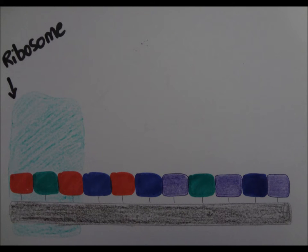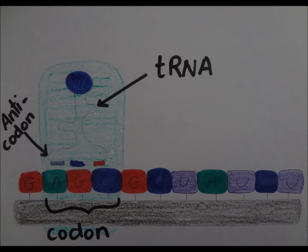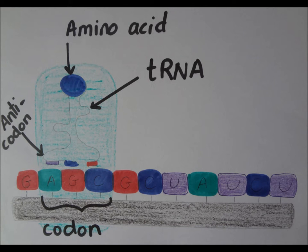As the ribosomes move along the mRNA strand, transfer RNA molecules with an anticodon on one end and an amino acid attached on the other end bind to their complementary codons.